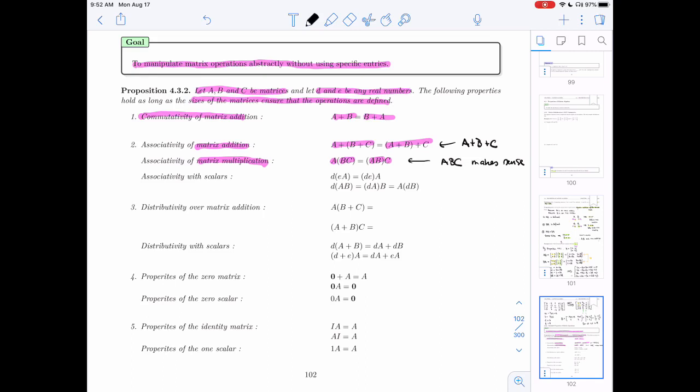You can distribute matrix over addition. So in this case here, I can send the A in. I'll get AB plus AC. A must stay on the left. Same thing here. Here I can send C in, but now C's on the right, so it must stay on the right. So here C's on the right, it stays on the right. I can distribute scalars over matrices, so I can multiply that D in, and I can multiply that A in.